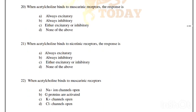When acetylcholine binds to muscarinic receptors, the response is: always excitatory, always inhibitory, either excitatory or inhibitory, or none of the above. Correct answer is option C, either excitatory or inhibitory.